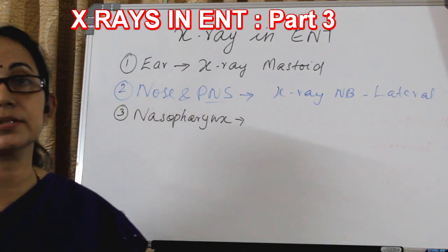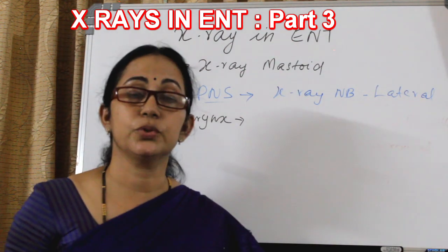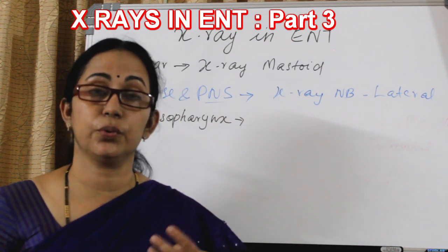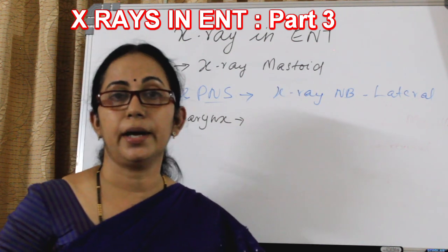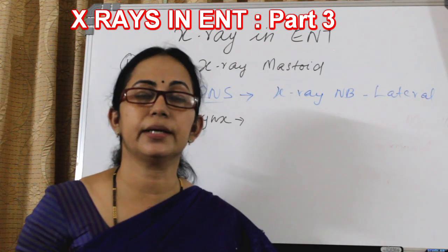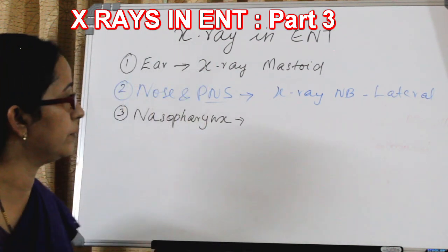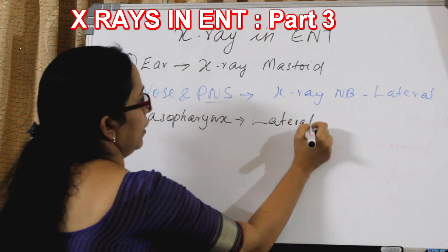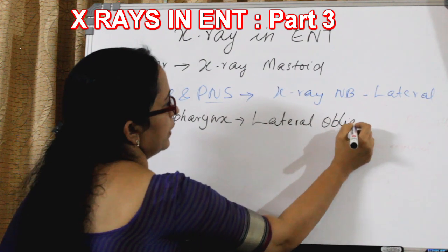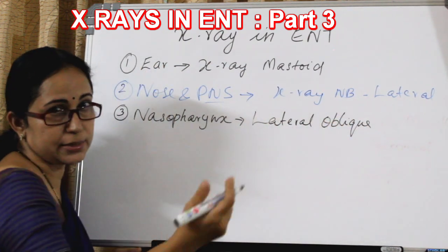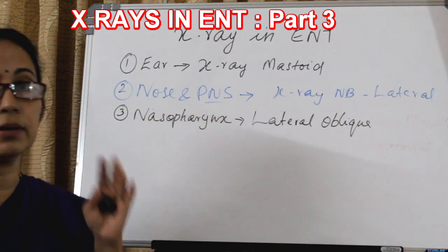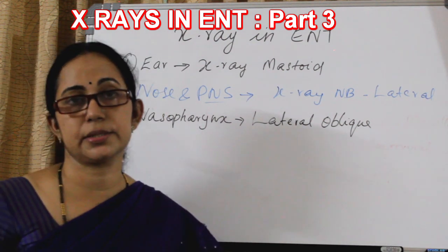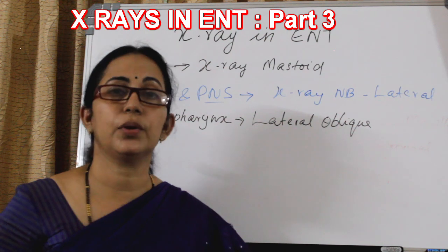Plain X-ray nasopharynx is usually taken in ENT, especially in children, to find out adenoid hypertrophy. We usually take X-ray nasopharynx lateral view. You can also take a lateral oblique view. If you take a true lateral view, there is a chance of overlapping between other structures, so lateral oblique view of nasopharynx is better than a pure lateral view.